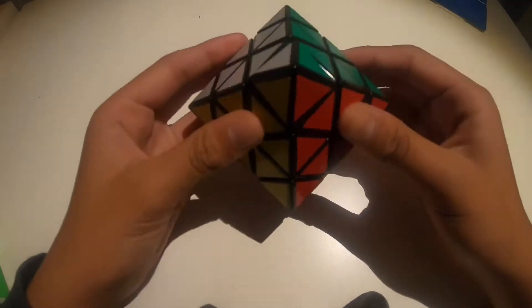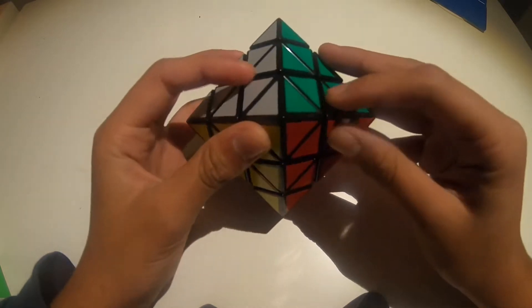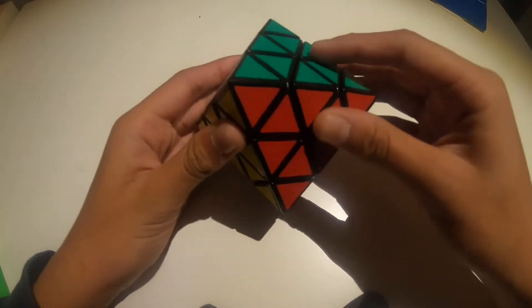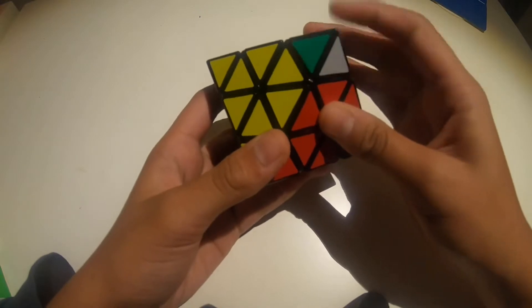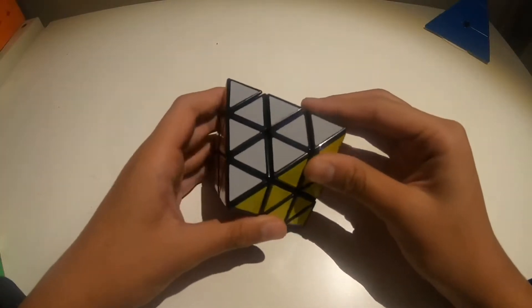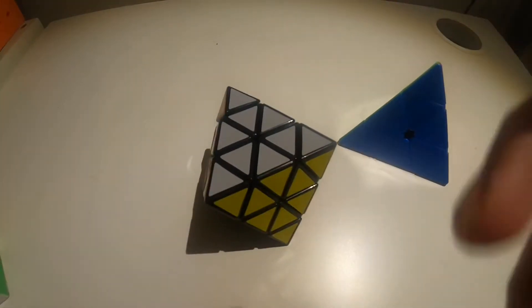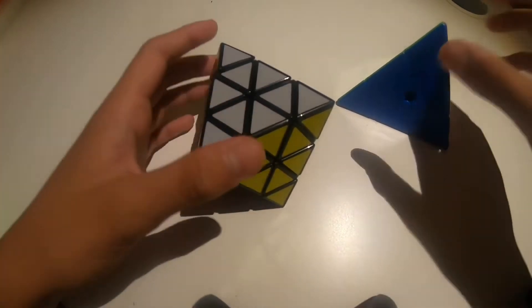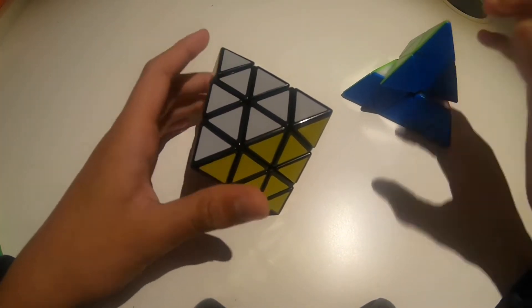Yeah, so before you ask, it is not an FTO or face turning octahedron, it is a CTO or a corner turning octahedron. So basically, it's kind of like a Pyraminx, but it's like a giant Pyraminx.